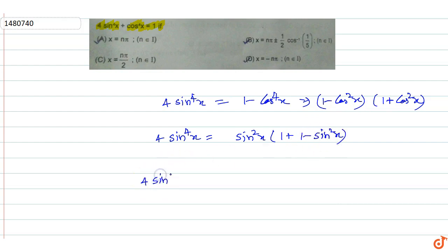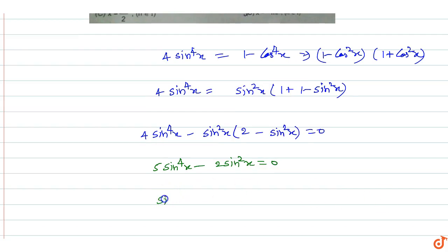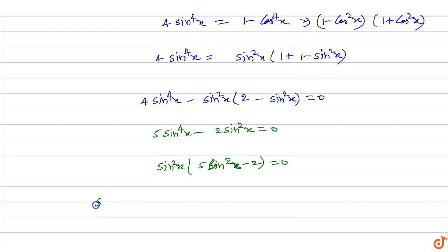So 4 sin⁴x minus sin²x times (2 minus sin²x) equals 0. This simplifies to 5 sin⁴x minus 2 sin²x = 0. Factoring out sin²x, we get sin²x times (5 sin²x minus 2) = 0.